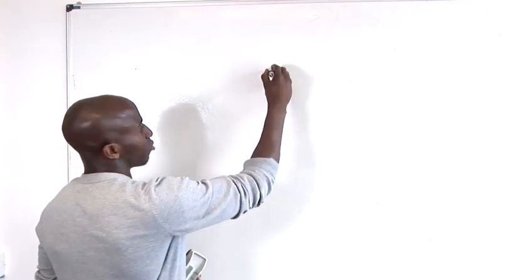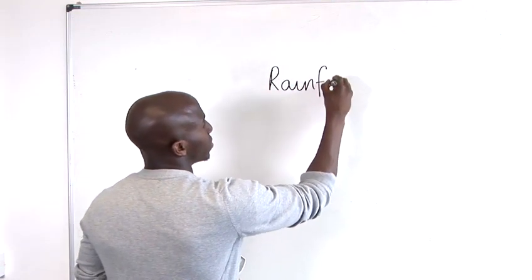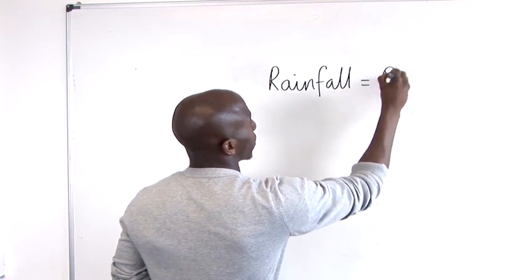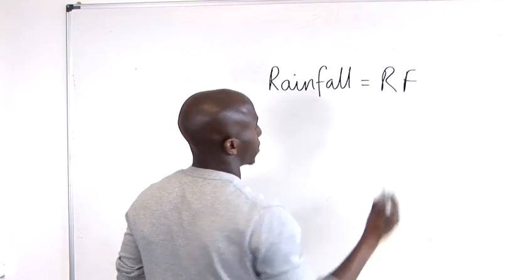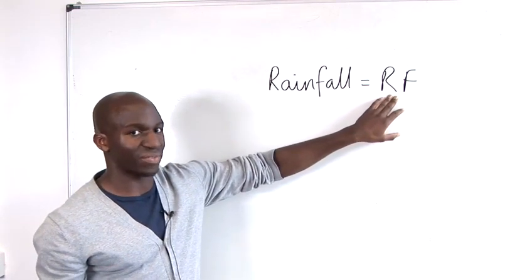So if you looked at rainfall over the course of months, you might just call rainfall RF. And this becomes a lot easier to use in maths.